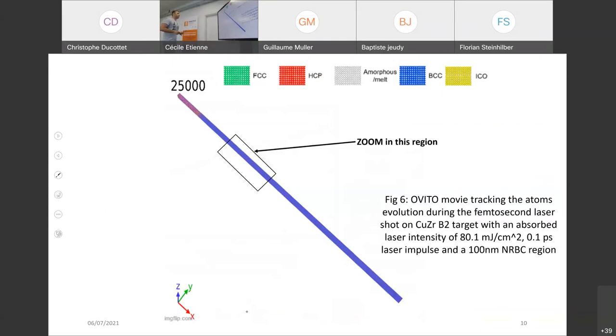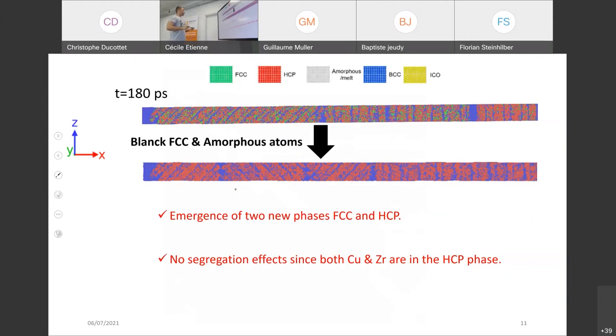This is the first simulation that we managed. As you can see here, the time is in picoseconds: 100, 140 picoseconds. Here we have the formation of liquid state on the surface, which is normal. But what is interesting is what happened here in the zoom region. The first thing we can notice is the emergence of two new phases: the FCC and the HCP in this BCC matrix.